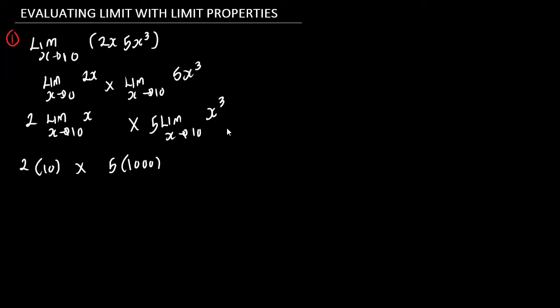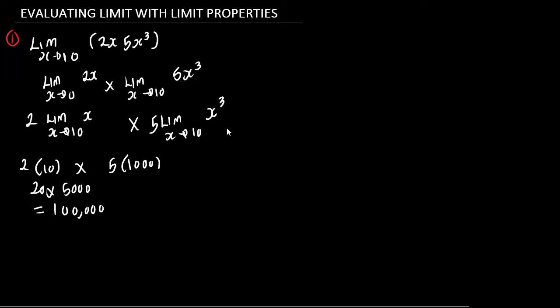So this is 2 multiplied by 10, then multiplied by 5. The limit as s approaches 10 of s cubed is going to be 10 raised to the power of 3, which gives us 1,000. So this is going to be 5 multiplied by 1,000. Then 2 multiplied by 10 is 20, multiplied by 5,000. Evaluating this, we are going to have the value to be 100,000. So this is going to be the limit.